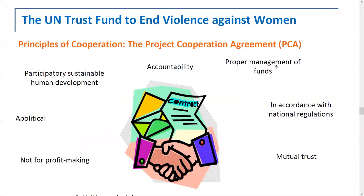The PCA lays out many principles — these are general principles of the UN which we expect funded organizations to fulfill — such as a commitment to being apolitical, a commitment to not being profit-making, and a commitment to being participatory and accountable. There's a lot of jargon, but we unpack it in the grantee handbook.